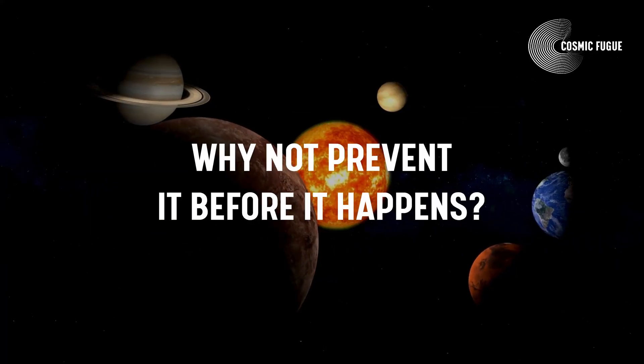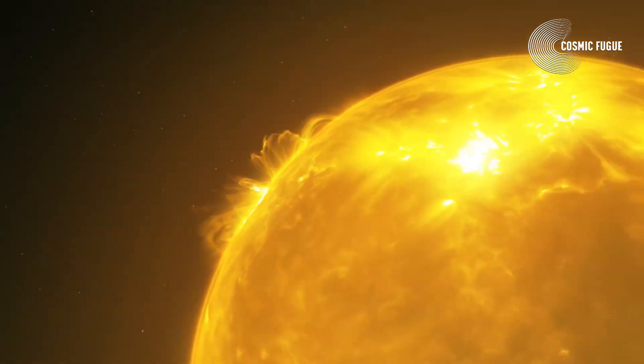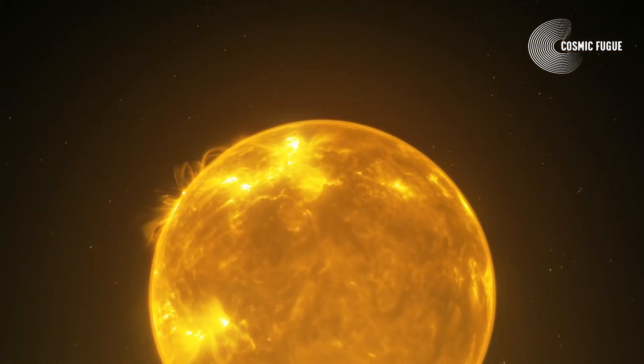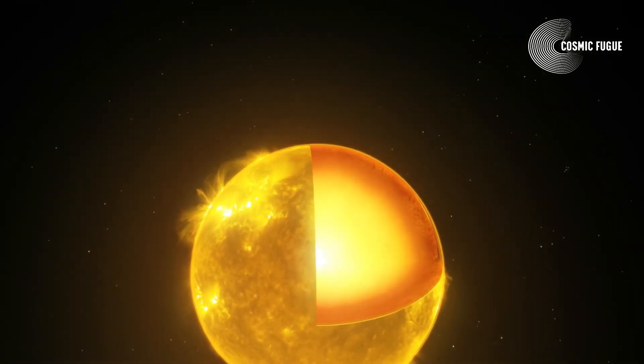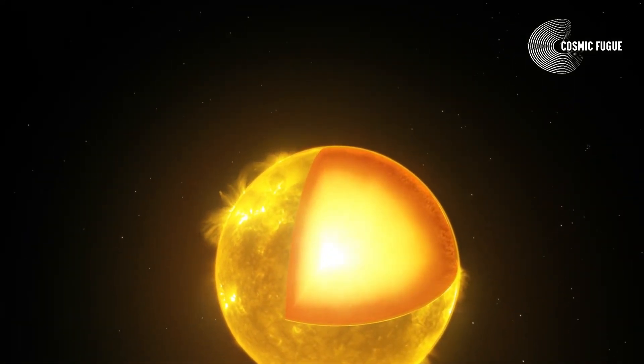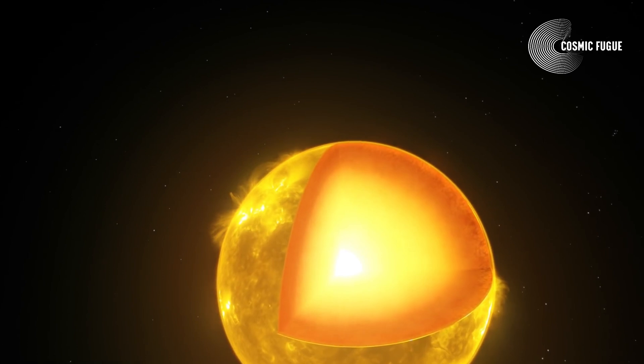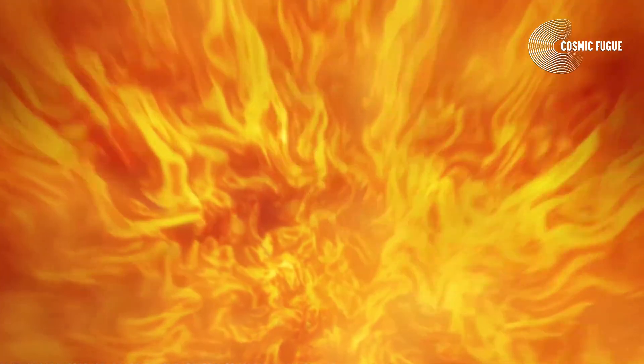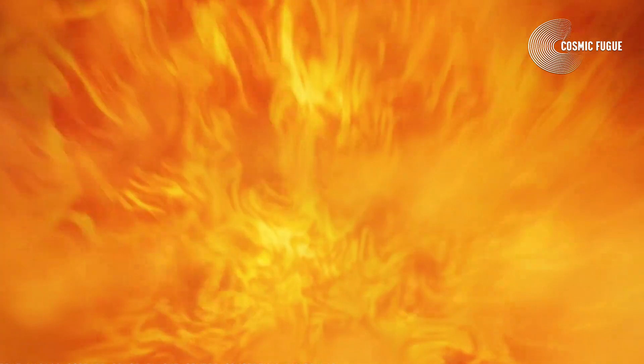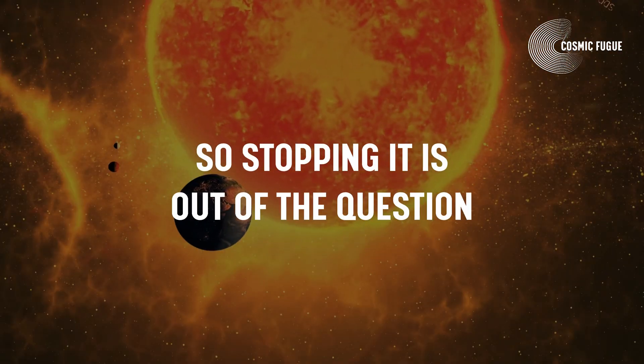However, why not prevent it before it happens? Preventing asymmetric threats from solar storms and EMP attacks is almost impossible. For one, we don't fully understand the dynamics within the Sun, and are still not able to predict when solar eruptions are going to happen, how large they may be, and in which direction they will point. So stopping it is out of the question.